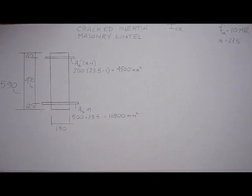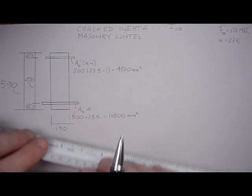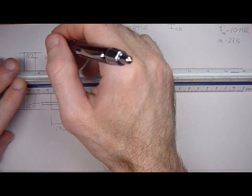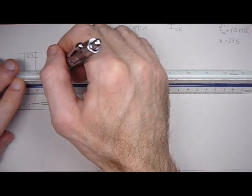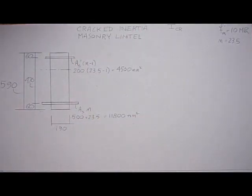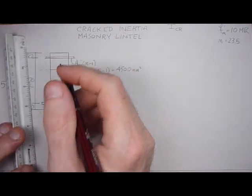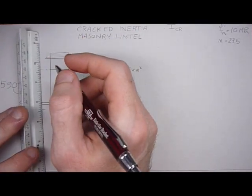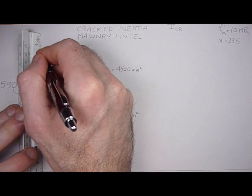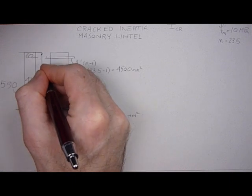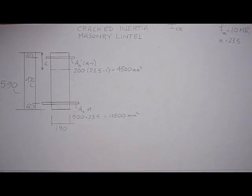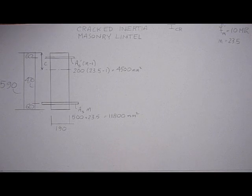Now, in this example, to calculate the I cracked, the first thing we have to do is calculate the neutral axis location, which is going to be somewhere here. And that's C. The distance from here to here is C. And we'll use static moments for that.